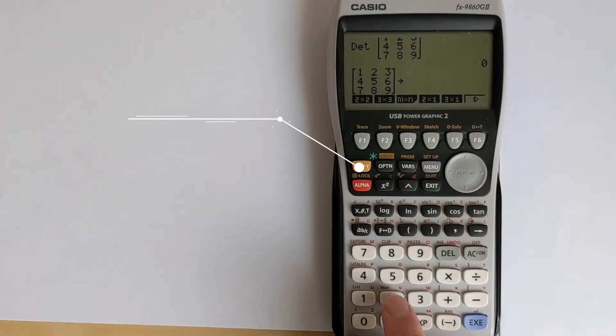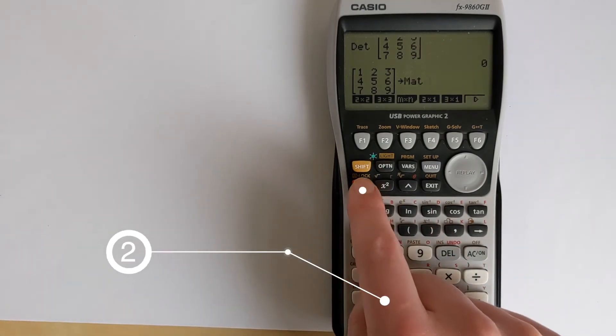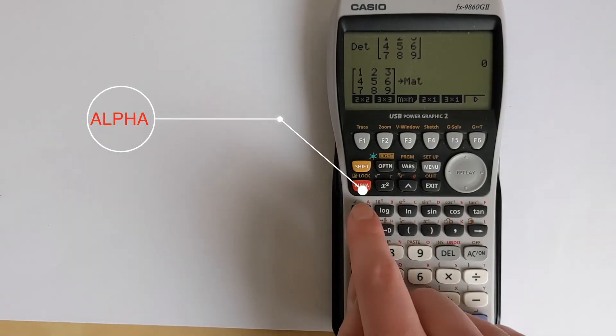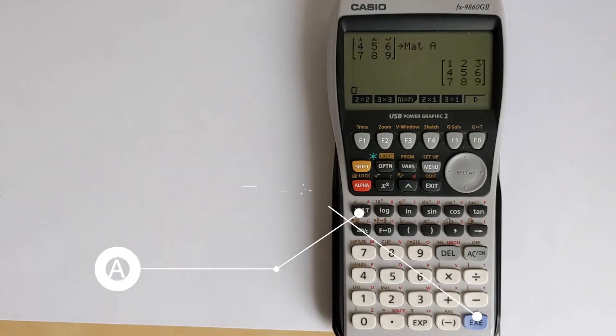So if you press shift and then mat, then you press alpha, then A, and then equals. That is now assigned that to be matrix A.